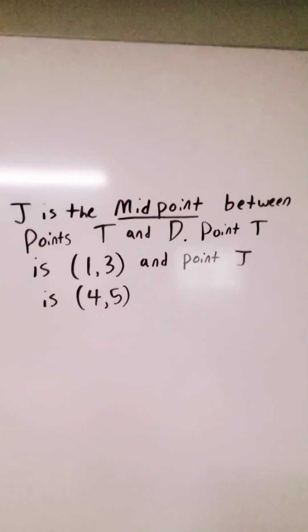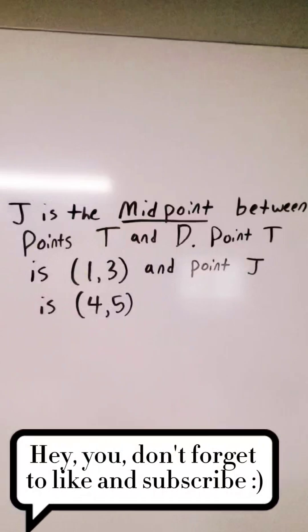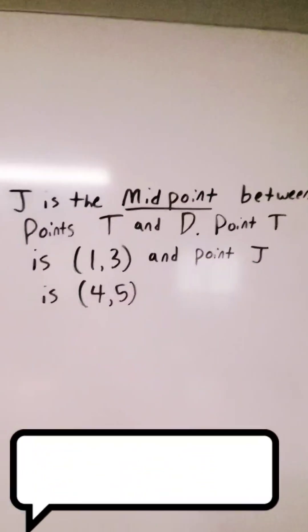Well, this is weird. We are given a problem where it says J is the midpoint between points T and D, point T is 1, 3, and point J is 4, 5.